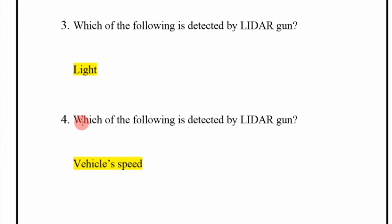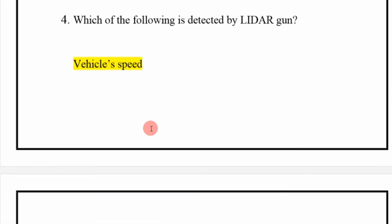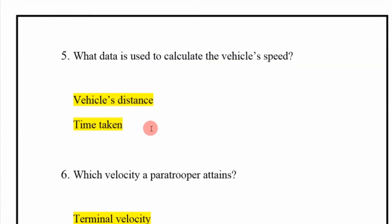Which of the following is detected by LIDAR gun? Light. Which of the following is detected by LIDAR gun? Vehicle speed. What data is used to calculate the vehicle speed? Equal distance and time taken.